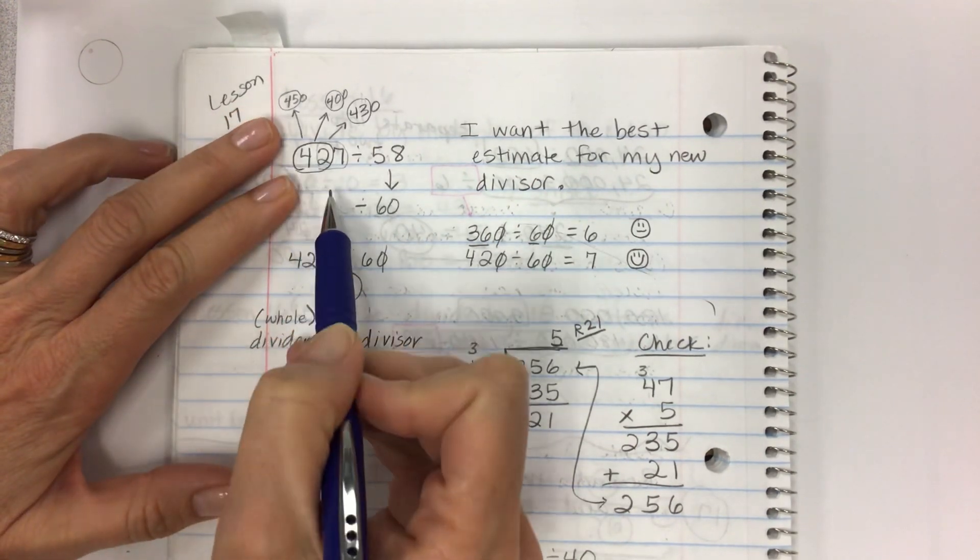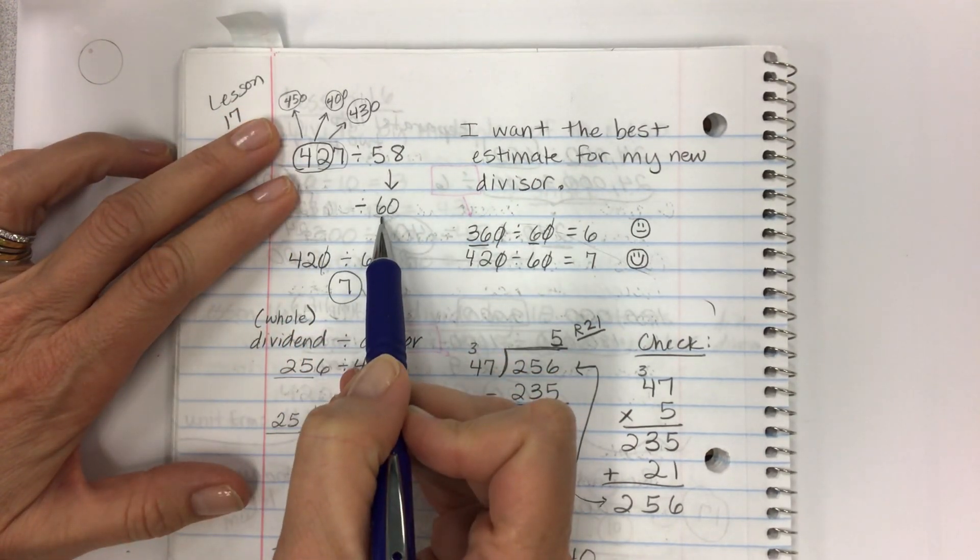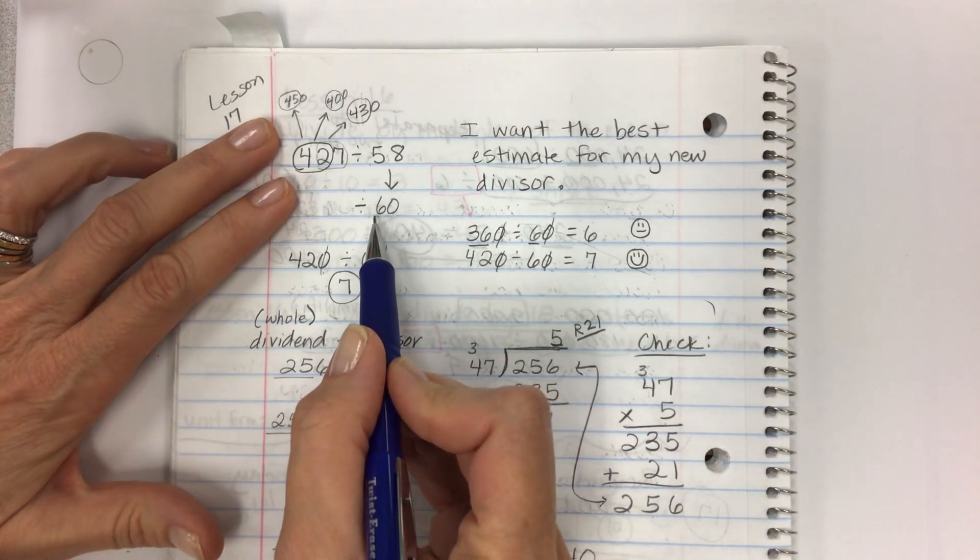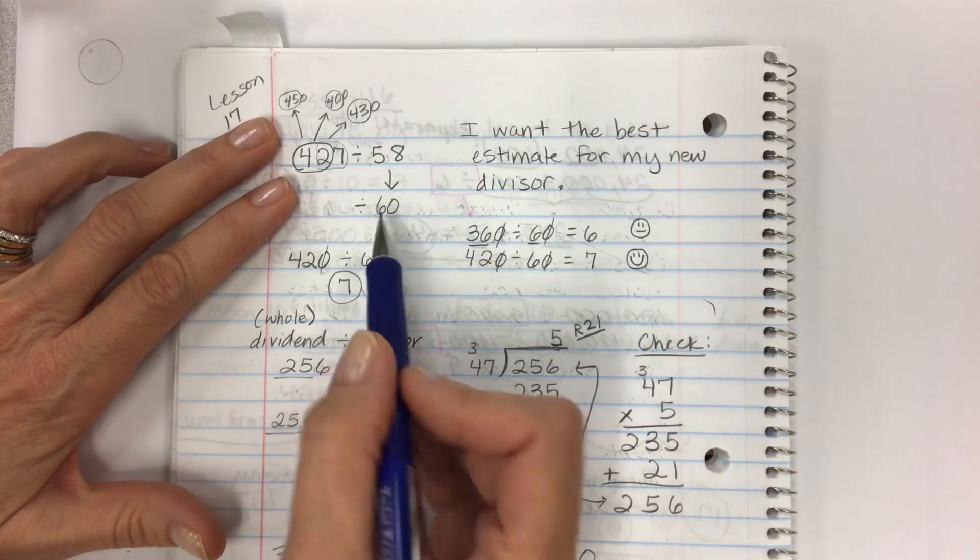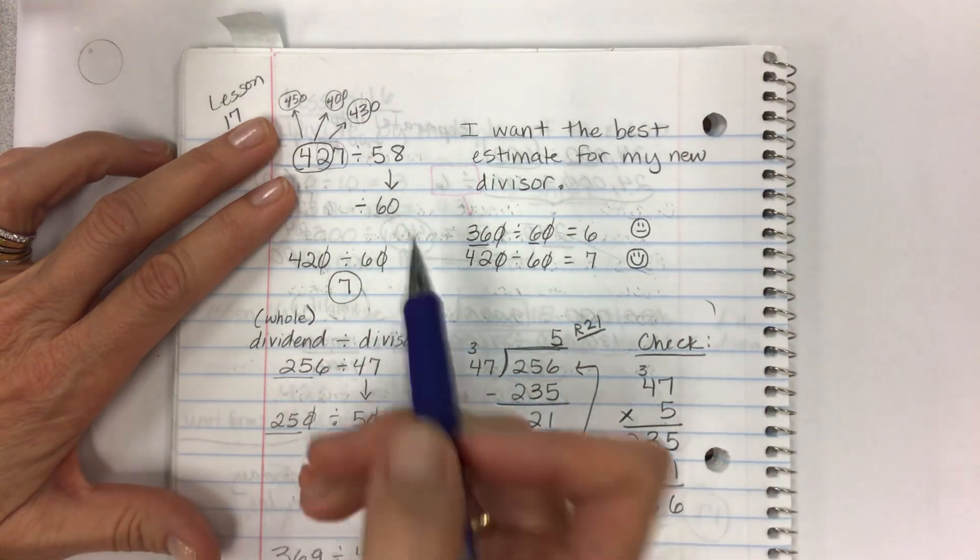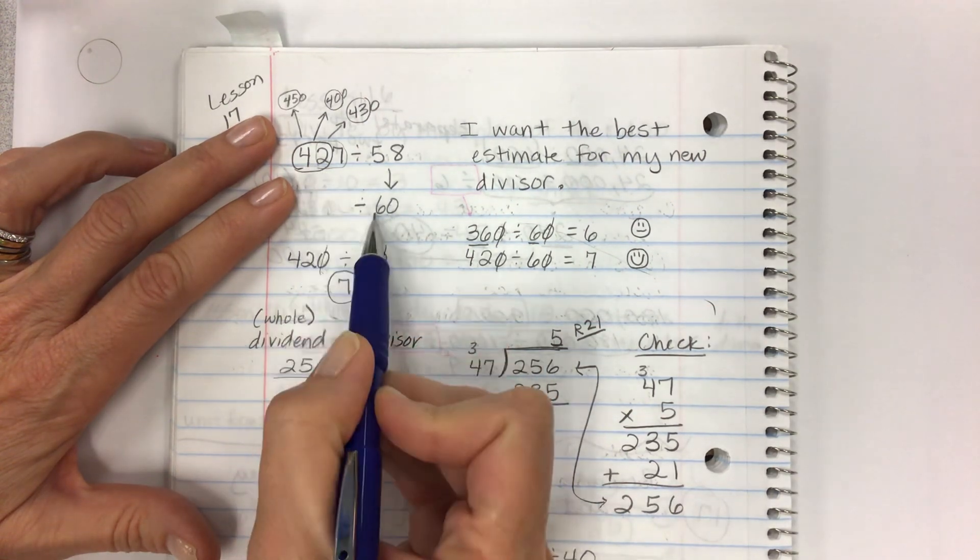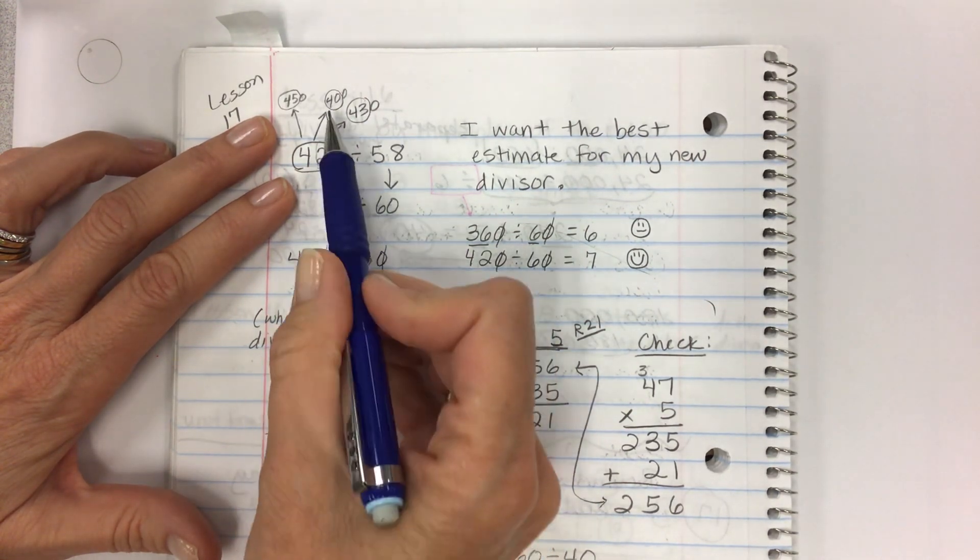I want the best estimate for my new divisor and I need numbers that are compatible. And some kids will say, what about 450? Well, 45 is not a multiple of 6. So this is where knowing your facts is absolutely critical. If you need to have a multiplication chart handy, have it handy. Because that's not what we're working on today.